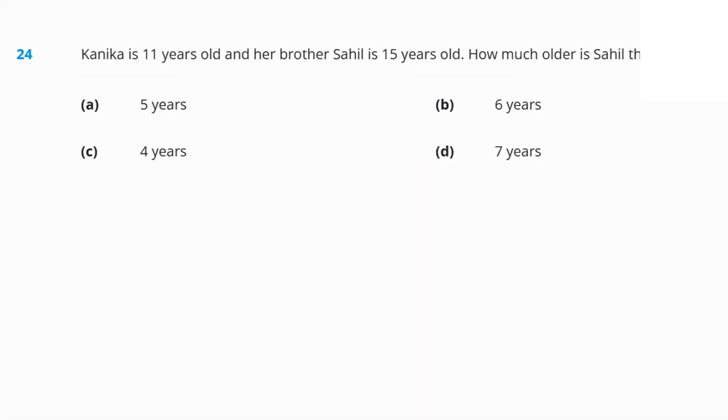The next question reads, Kanika is 11 years old and her brother Sahil is 15 years old. How much older is Sahil than Kanika? The difference? 15 minus 11. That's 4 as the answer. So, 4 years. Option C is the answer.